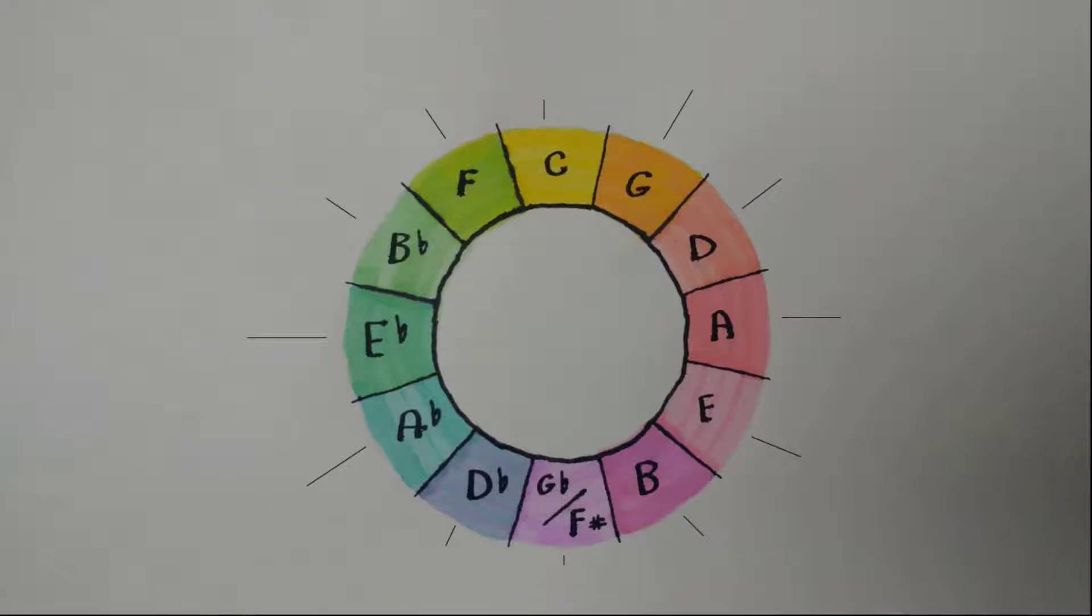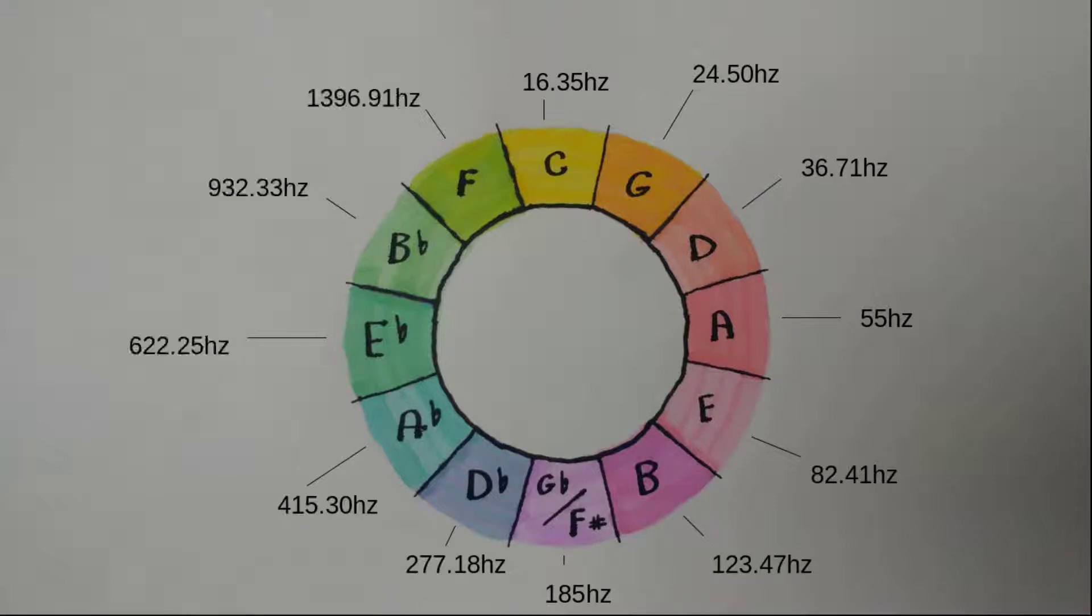Let's try this instead. If we start with a very low C around 16 hertz, then we can go up by a fifth and get G around 24 hertz, D around 36 hertz, A at 55, and now we can start to continue clockwise and have numbers that are also going clockwise, which makes a lot more sense.